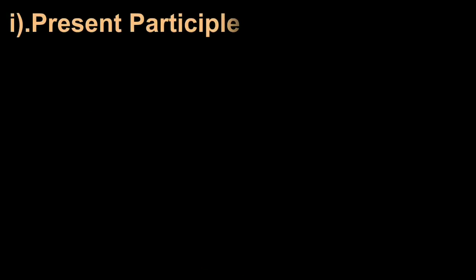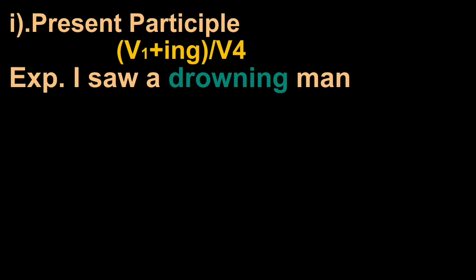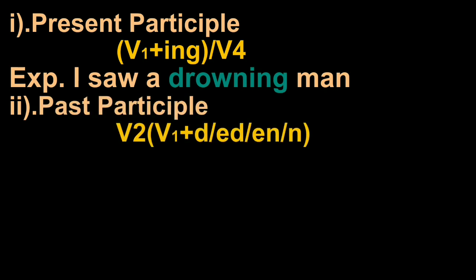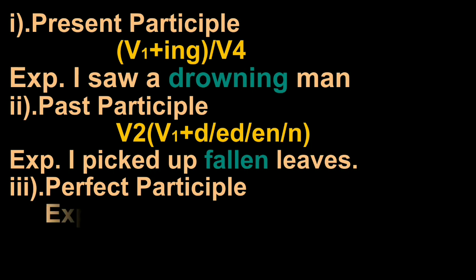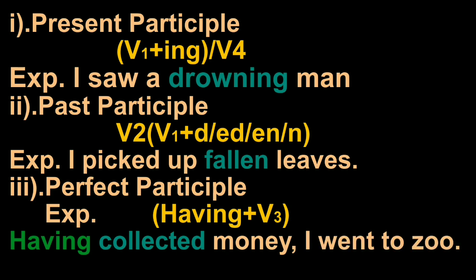Let's know the examples of these three. First is present participle: V1 plus 'ing' or V4. One example is 'I saw a drowning man,' where drowning is present participle. Past participle is V2, the past form of the verb, or V1 plus 'ed' or 'en'. Example: 'I picked up fallen leaves' - fallen is past participle. Third one is perfect participle, configured as 'having' plus V3, the third form of the verb. Example: 'Having collected money, I went to zoo.' Having is added and collected is V3, so it is perfect participle.